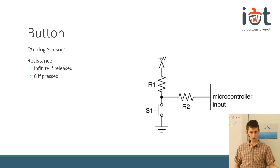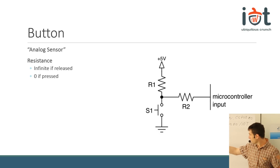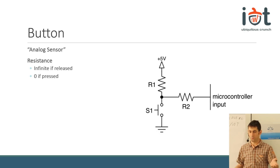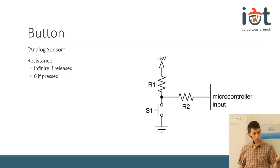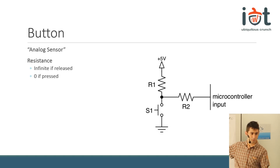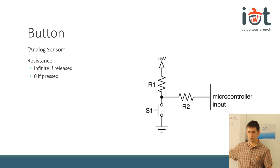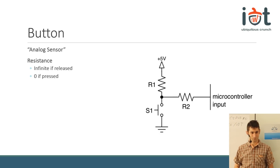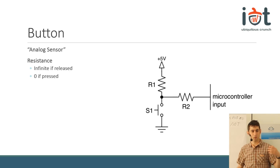What happens if we connect five volts directly with R1 equal to zero? If the button is not pressed, we read five volts. If we press the button, it's a short circuit - be careful. This is called a pull-up resistor; it pulls the pin voltage up to five when the button is not pressed. That's why it's called a pull-up.